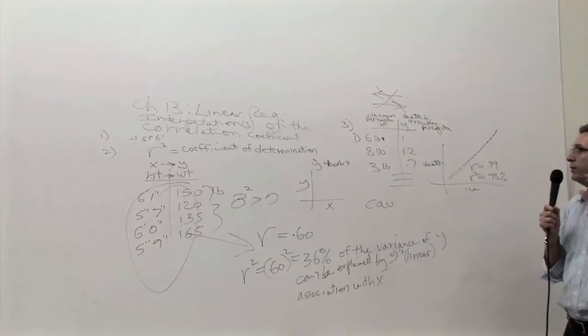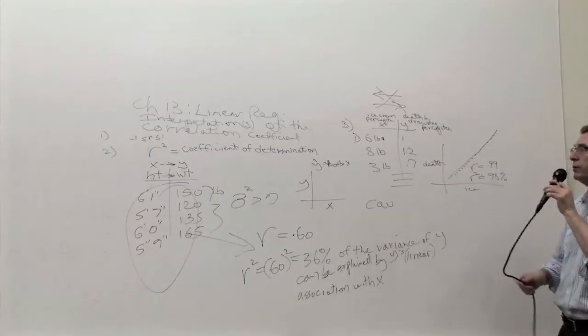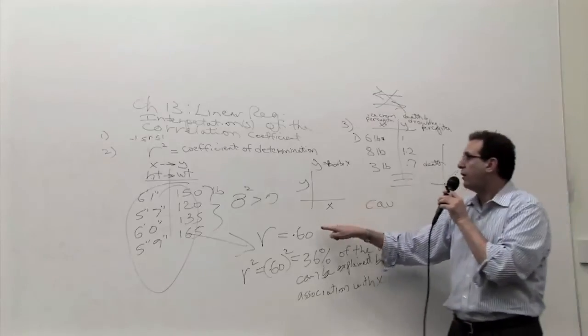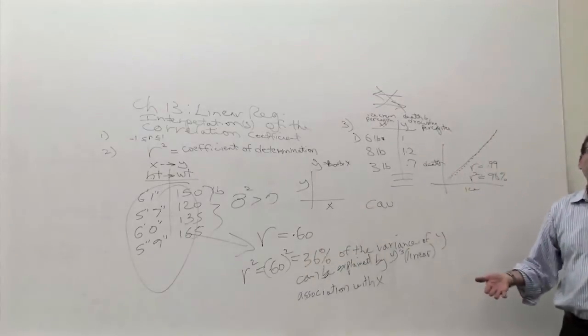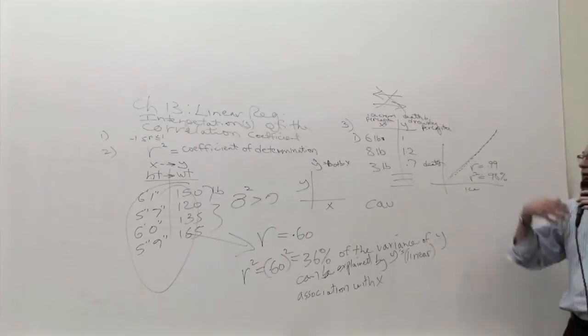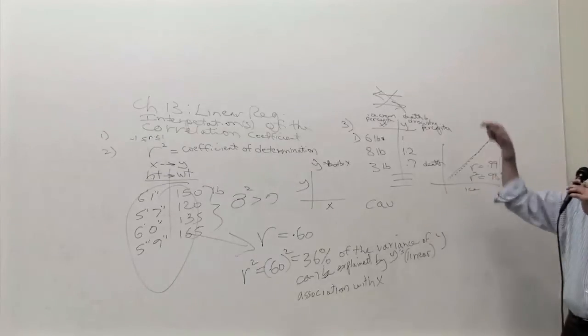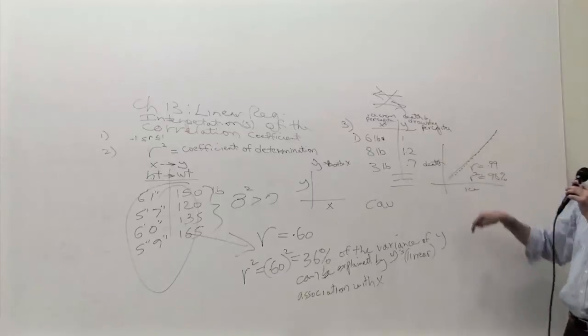But in the case of ice cream and death by drowning, it's not true. So the point I'm trying to make now is a very important point in interpreting correlation. Just because you have a high correlation or a high R squared, you can't jump to the conclusion that you discovered a causal mechanism that one has a direct impact on the other.